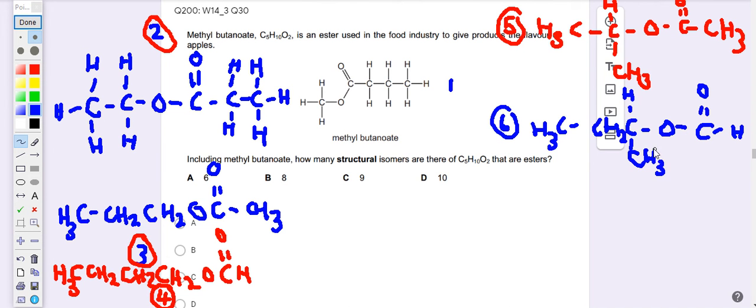I can put this branch on this carbon. So now this is the carbon with the branch, CH3. Now this is the seventh isomer.